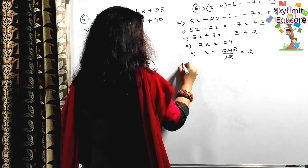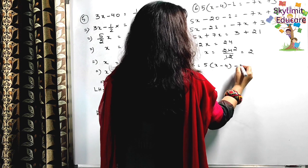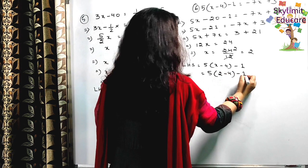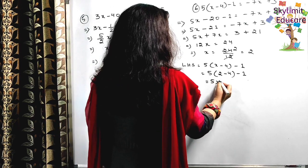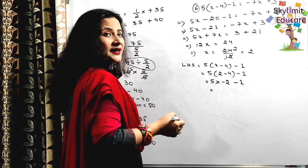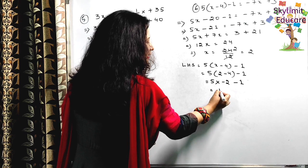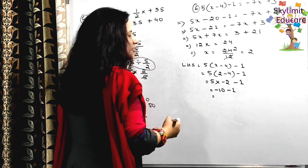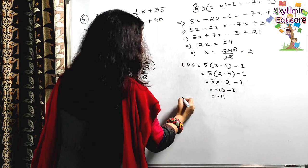Let's verify. LHS is 5(x - 4) - 1: substitute x = 2. Inside the bracket: 2 - 4 = minus 2. So 5 × (minus 2) - 1. First do the multiplication: 5 × minus 2 = minus 10. Then minus 10 - 1: both negative, add and keep the minus sign — giving minus 11.